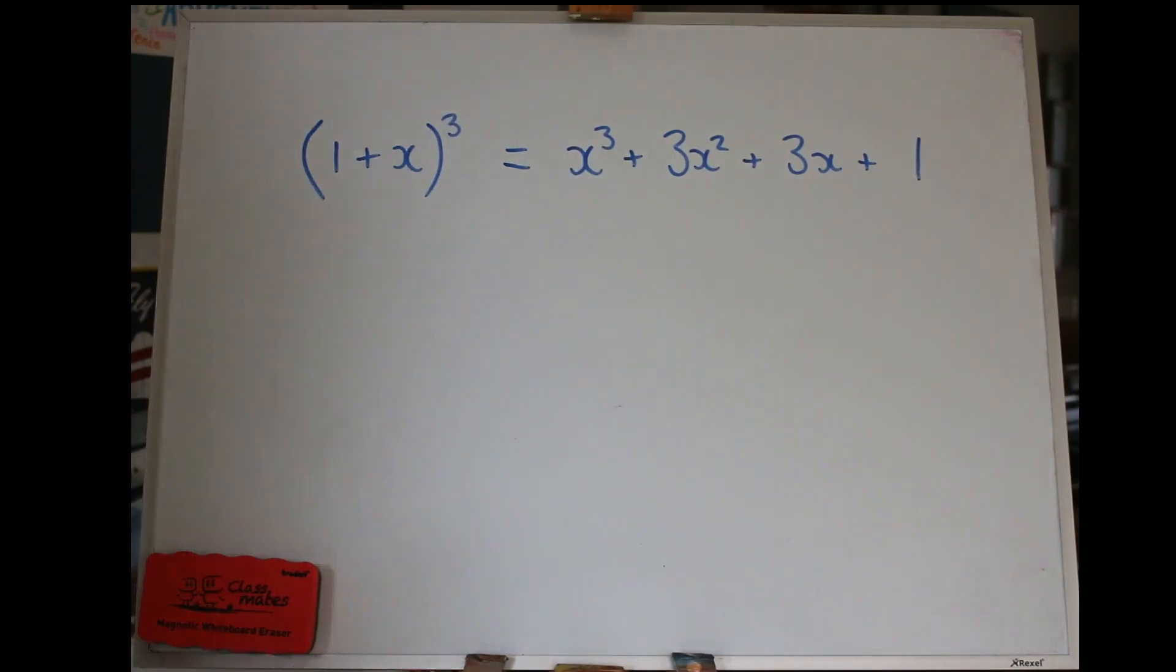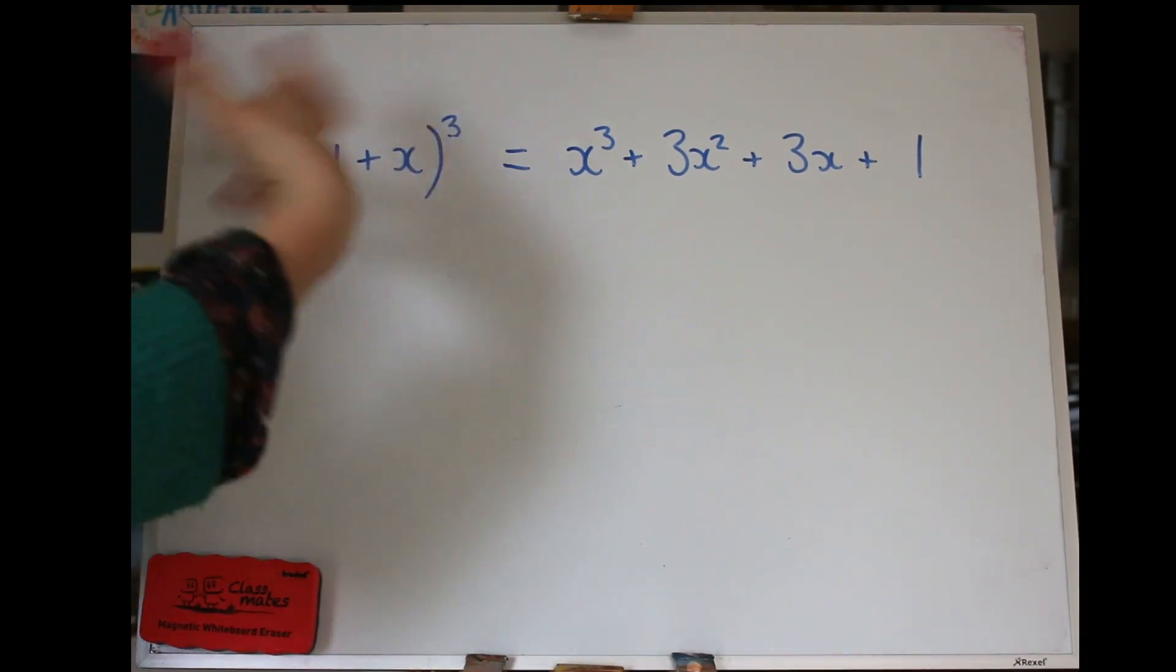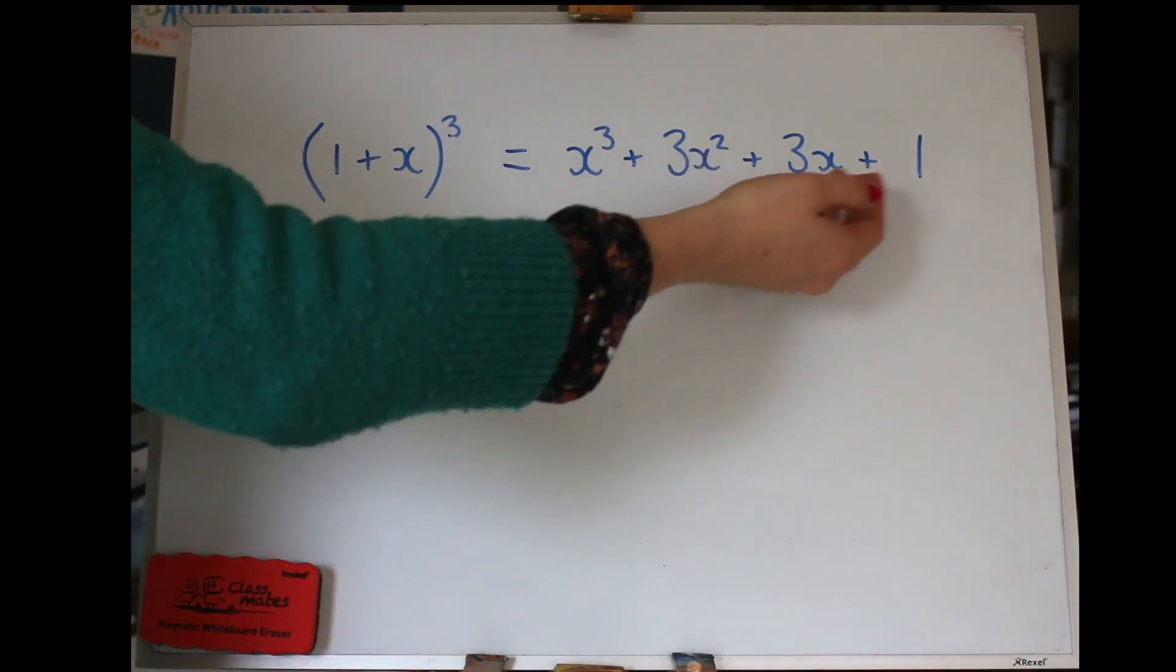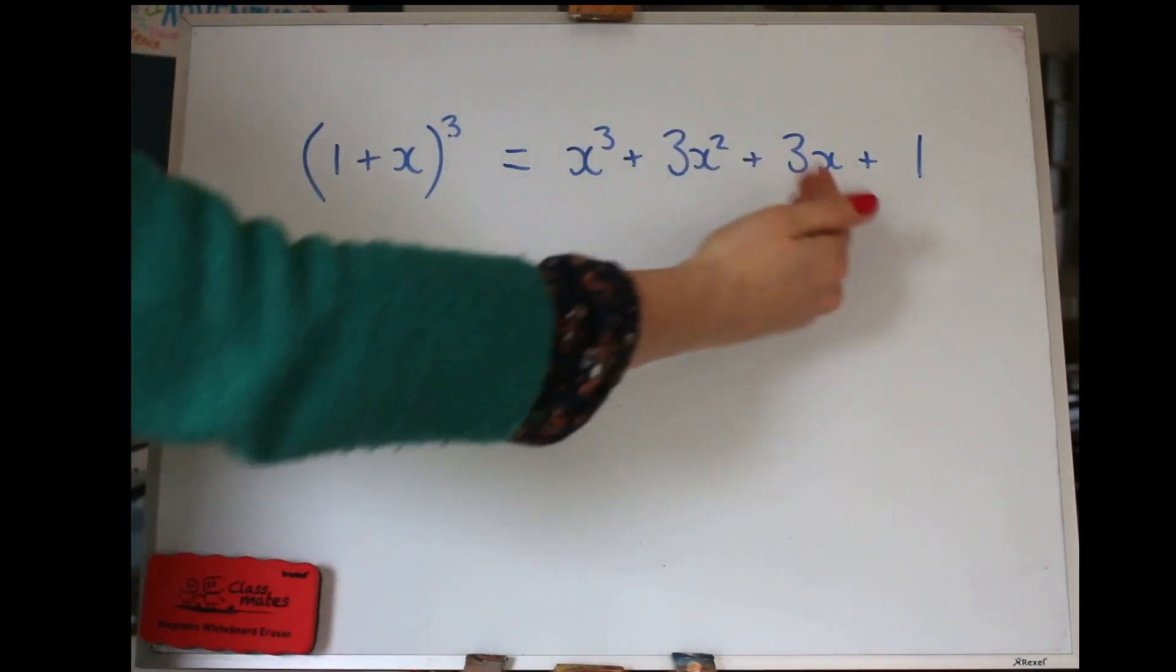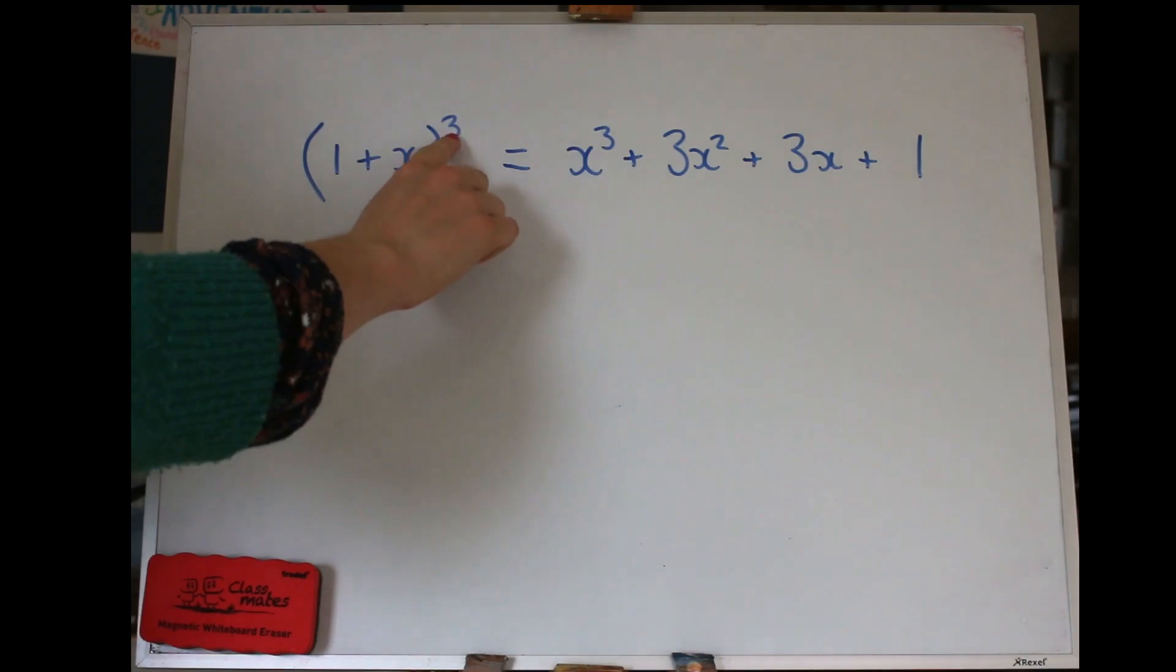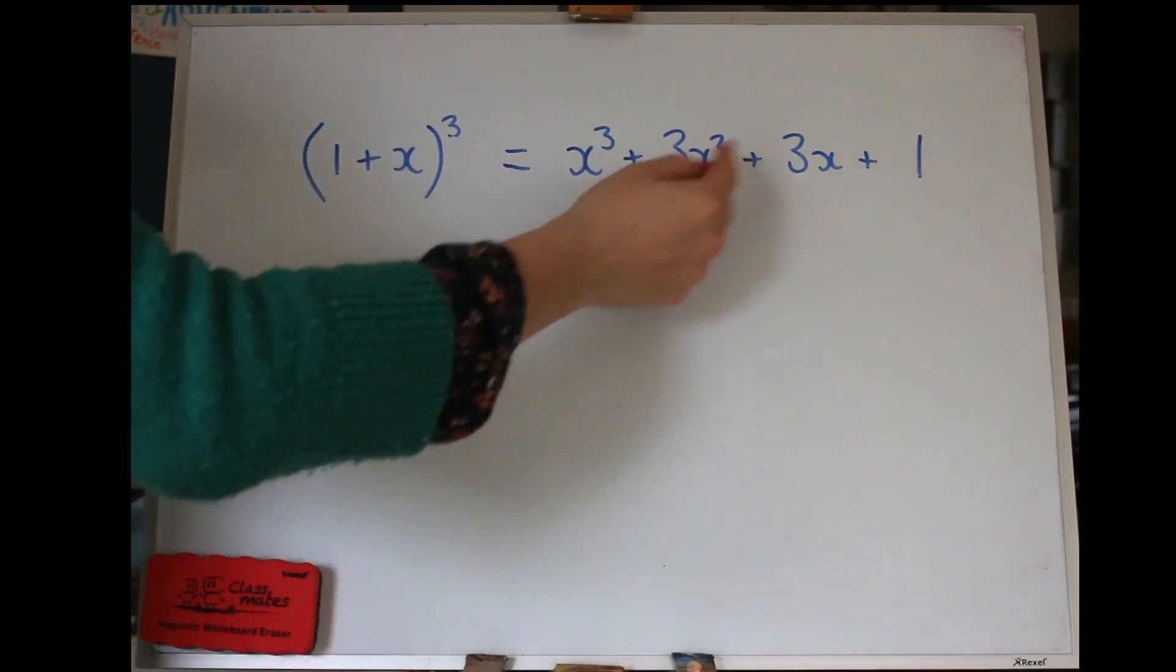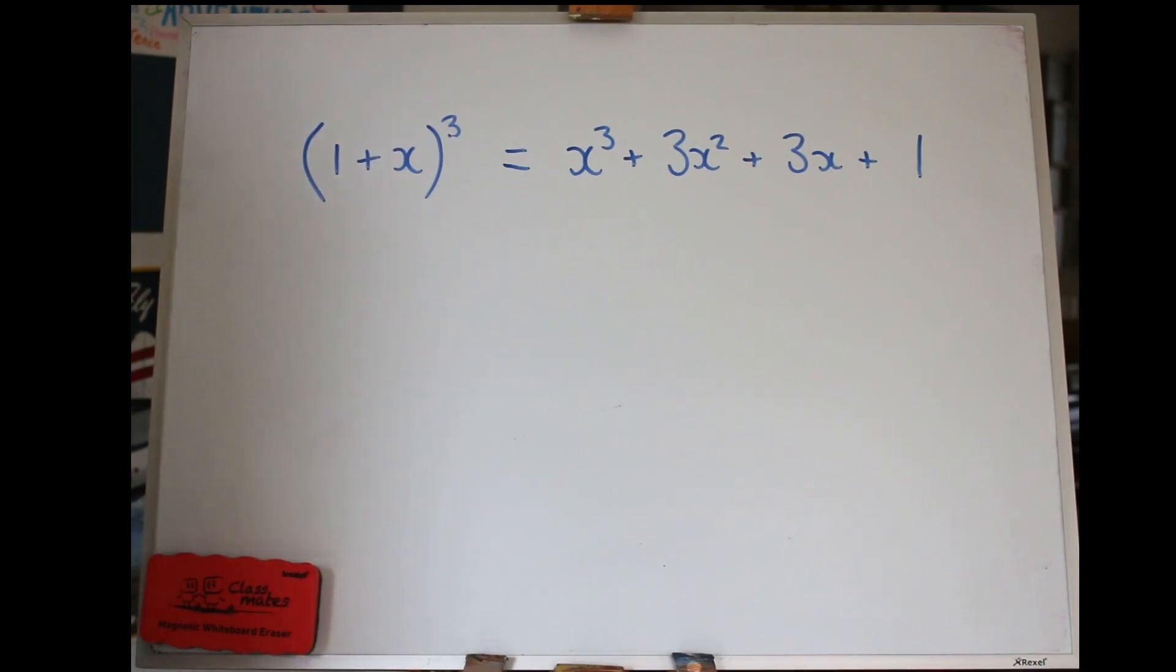So in my last video we looked at binomial expansions when your power is a positive whole number, a positive integer, and what happens is you get a beautiful tidy expansion of a finite number of terms, so that's a polynomial. So today we're going to look at what happens when your power isn't a positive integer and you can still use a binomial expansion of sorts, but it's not going to give you a finite number of terms, it's actually going to give you an infinite expansion, so an infinite series.